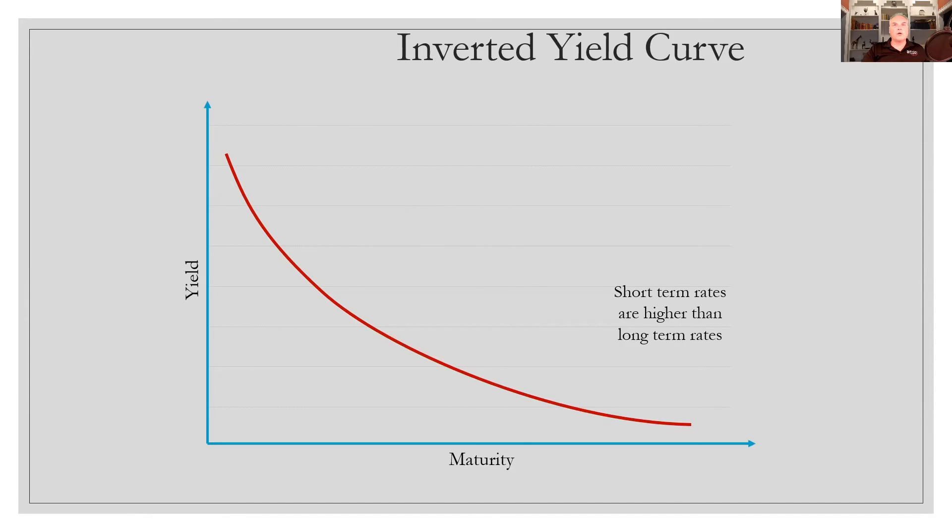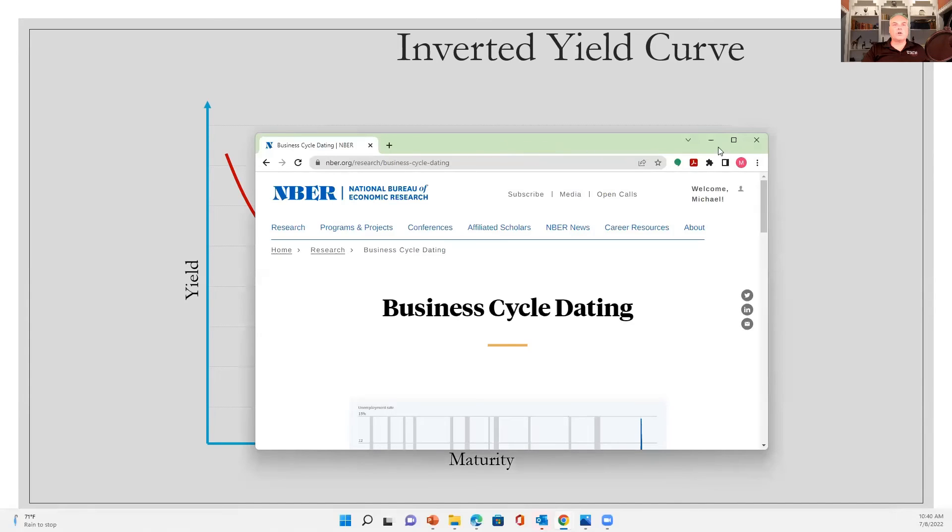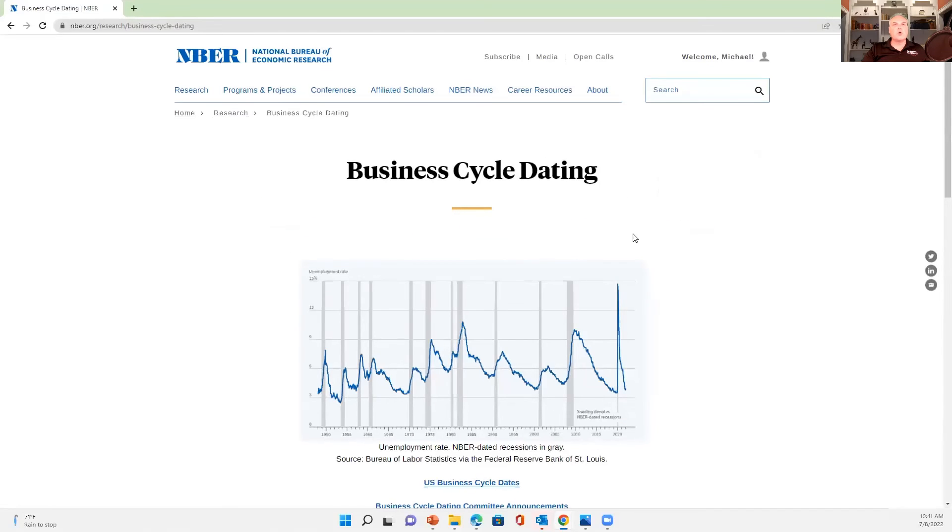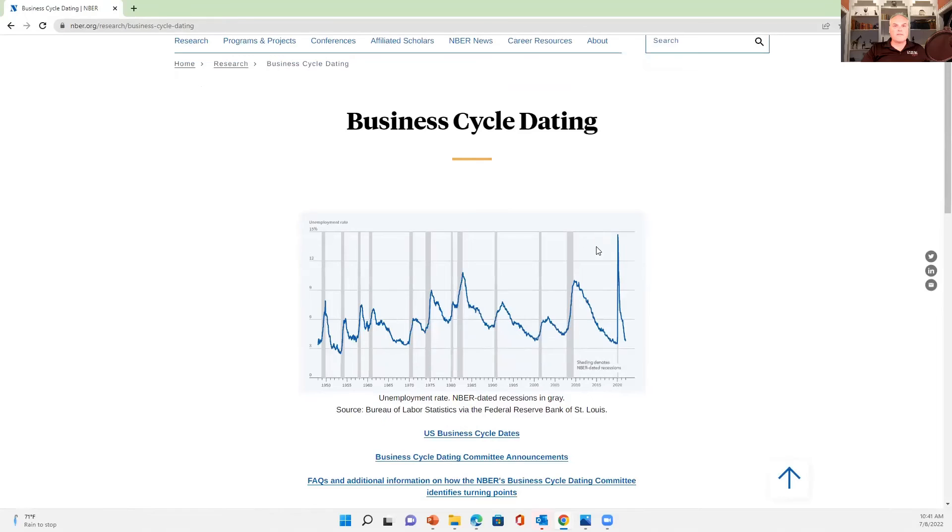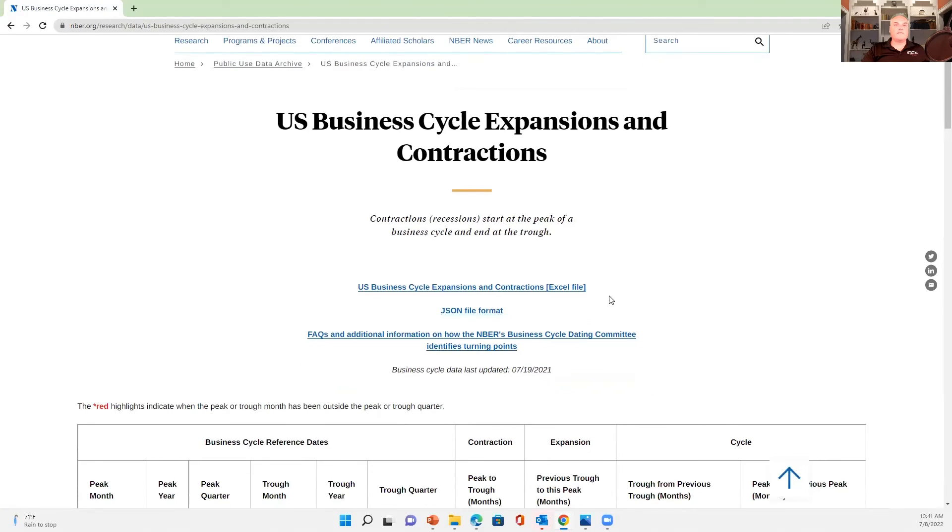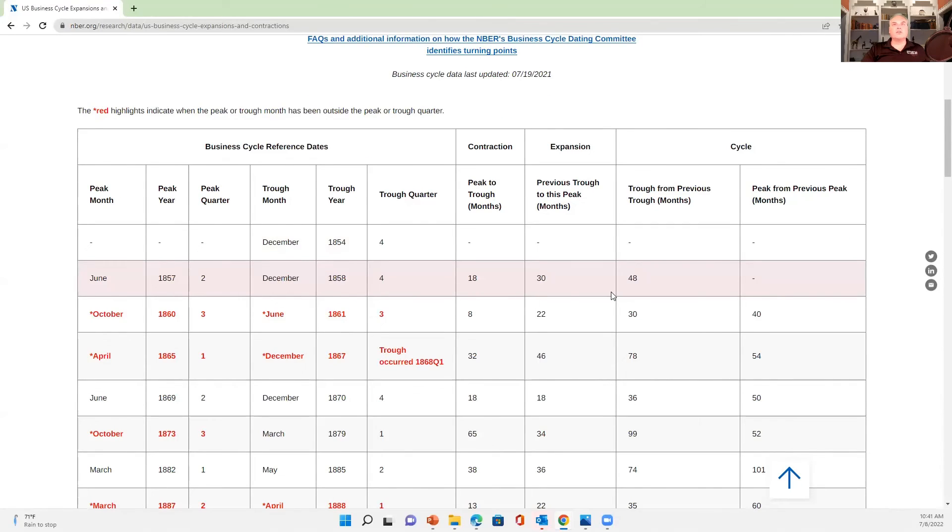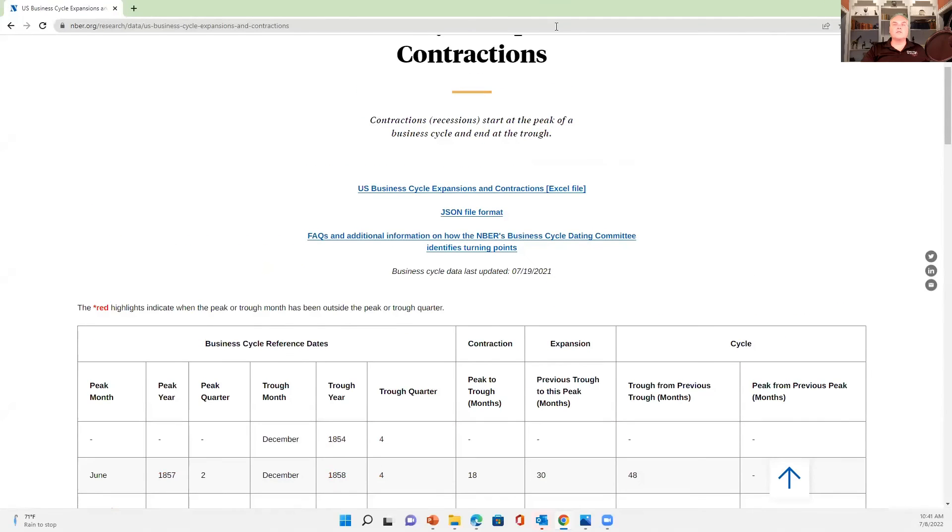there still is a group at this National Bureau of Economic Research who officially determines whether or not we are in a recession or an expansion or a depression. And they have records on their website that go all the way back to the beginning of the economy, back to the 1850s, showing how this cycle has gone through its various changes over time.